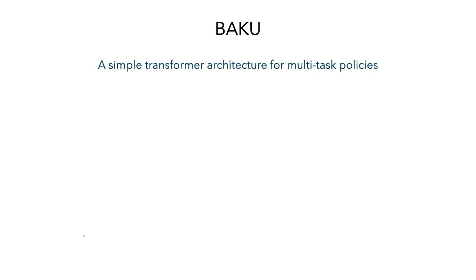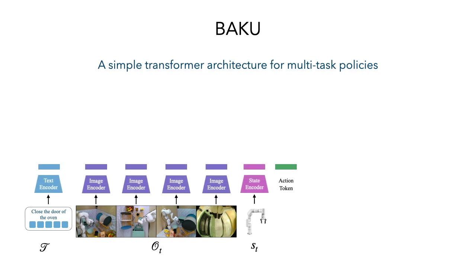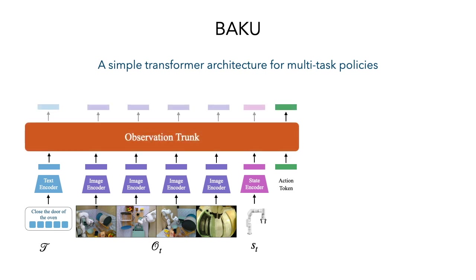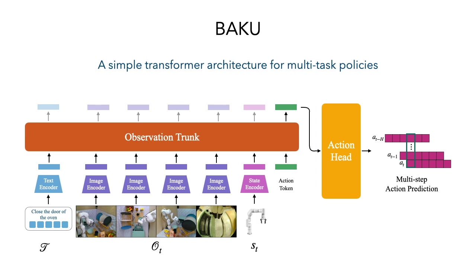Baku can be divided into three primary components: modality-specific sensory encoders which encode multiple camera views, task instructions, and robot proprioception. The encoded embeddings are then passed through an observation trunk which aggregates the information from different modalities to output an action representation. This action representation is then passed through an action head to predict multi-step actions.